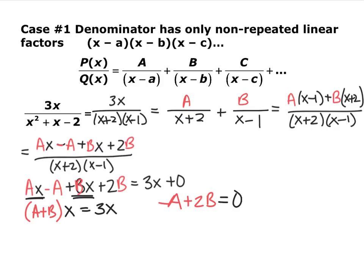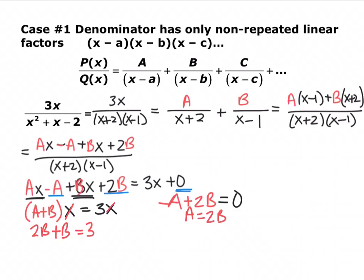Taking everything with an x gives a plus b equals 3. Anything without an x gives negative a plus 2b equals 0. Now I have two equations with two unknowns. Solving: from the second equation, a equals 2b. Substituting into the first: 2b plus b equals 3, so b equals 1.